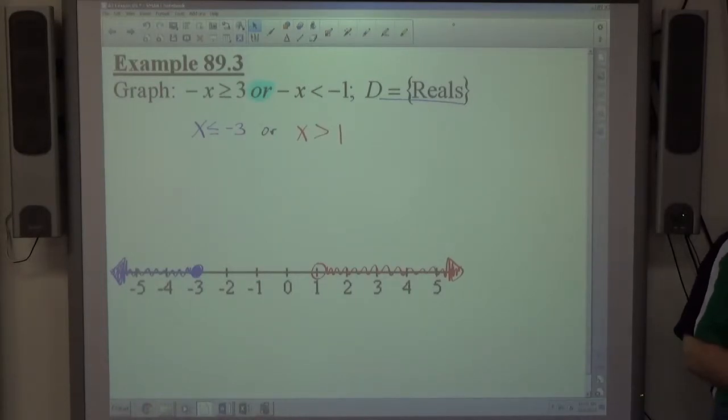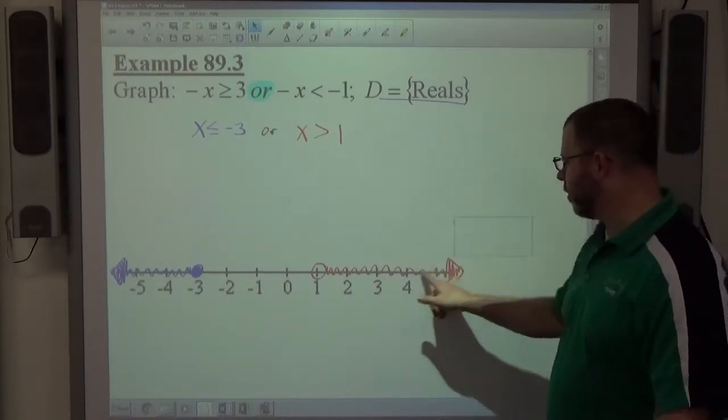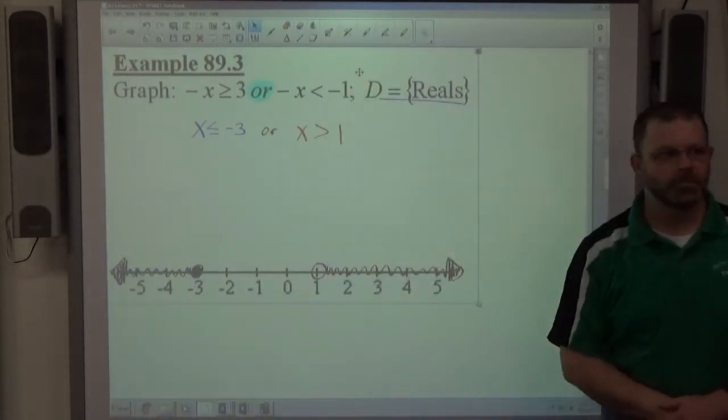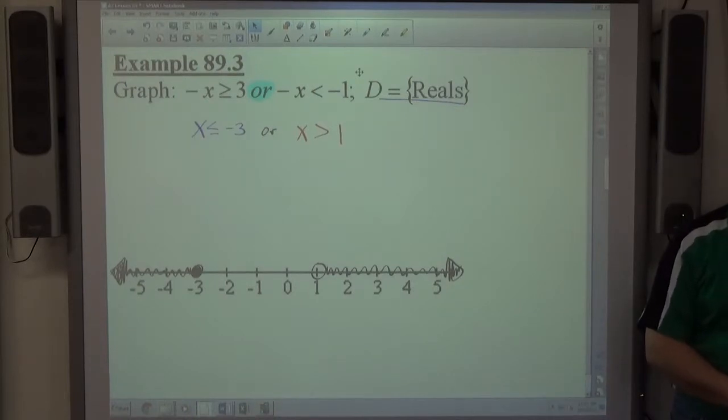Okay. Both inequalities are graphed on the same number line. They both count. That's the answer. Of course on your paper it'll all be the same color, so on your paper it'll look like this. The one's not any more important than the other. Both inequalities get graphed, whatever they look like.